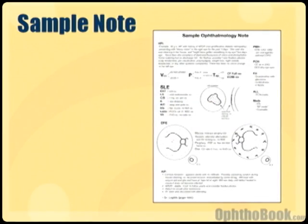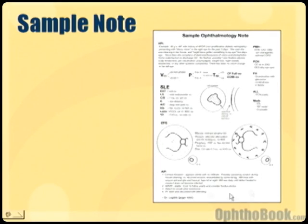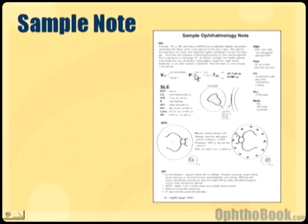The first thing you're going to notice if you rotate through an ophthalmology clinic is that our note is very large, very confusing, and there's a lot of jargon. As you can see in this sample note, there's a bunch of stuff you don't normally see. Some of it may be familiar, but a lot of it isn't, and I'm going to go through it bit by bit.